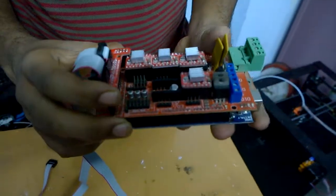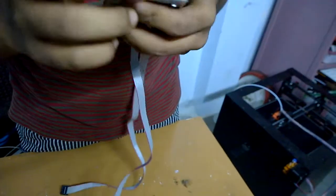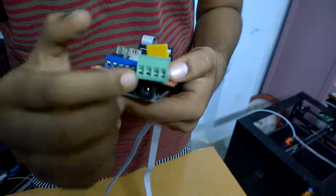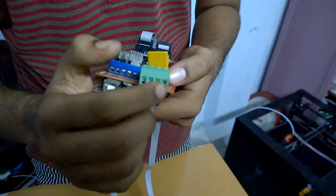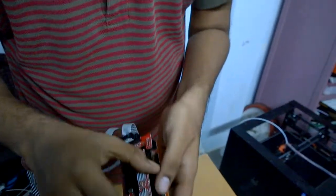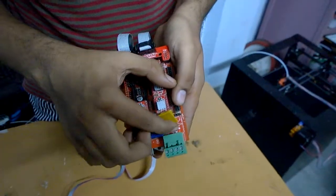This is a 3D printed controller. In this, this is the power source where 12V power supply is given. The polarity was given here, plus and minus.